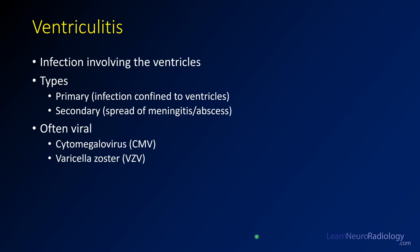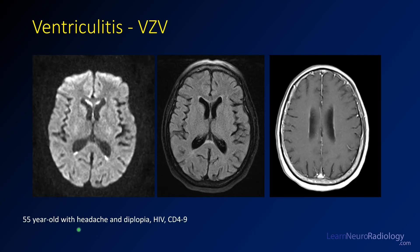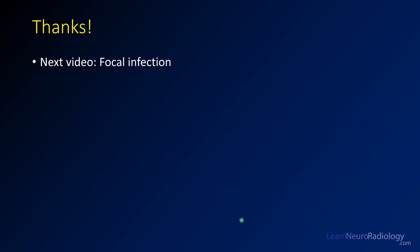The final diffuse infection is ventriculitis — an infection extending into or involving the ventricles. There are two types: infection confined to the ventricles, or secondary ventriculitis from spread of meningitis or abscess. Primary ventriculitis tends to be viral, such as CMV or VZV, with involvement of the ventricular margins. Here is a 55-year-old with headache and HIV, CD4 count of nine. Diffusion shows hyperintensity around the ventricles with material layering in dependent portions; FLAIR shows minimal parenchymal involvement; post-contrast shows a minimal wisp of enhancement around the ventricular margins. CSF was positive for VZV. The next video will cover focal infections within the brain.